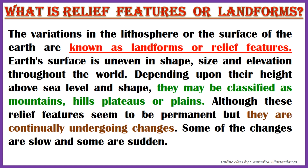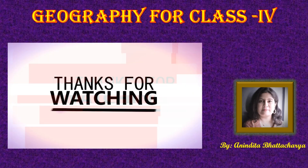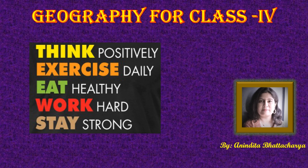The earth's surface is highly uneven, consisting of many mountains, extensive plateaus, and lowlands or plains — all of these can be called landforms or relief features. Depending upon their height above sea level, we can classify them according to shape and size — just like mountains, hills, plateaus, and plains. That's enough for today's class; we will meet in our next class. Bye and happy learning!